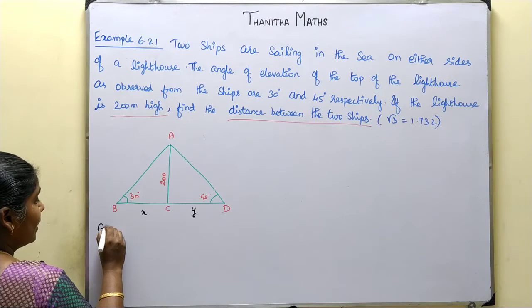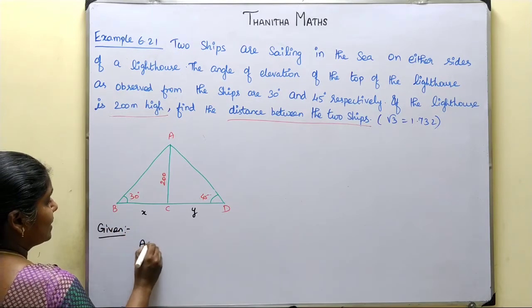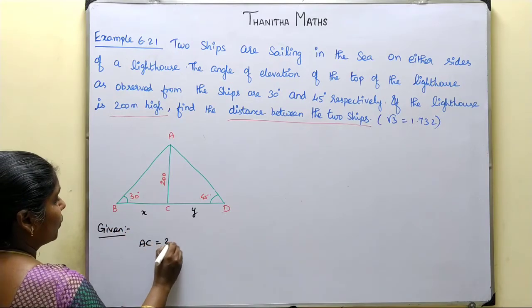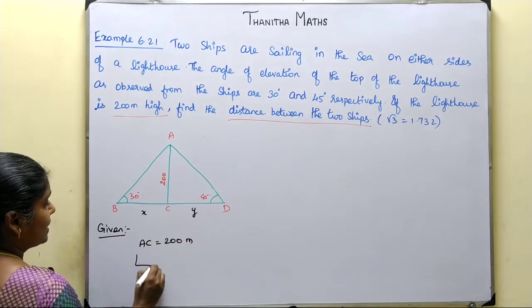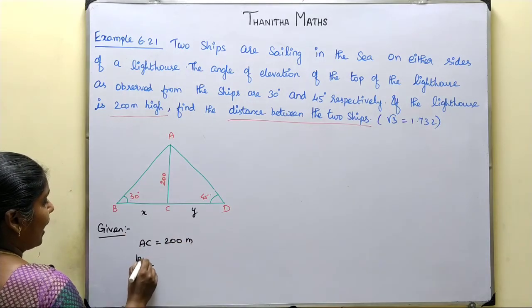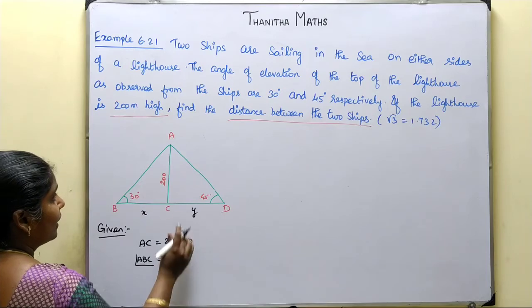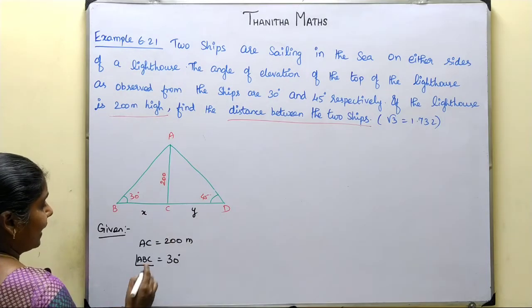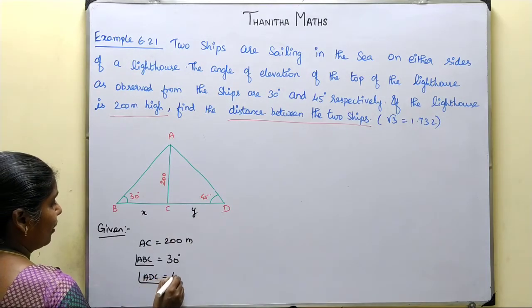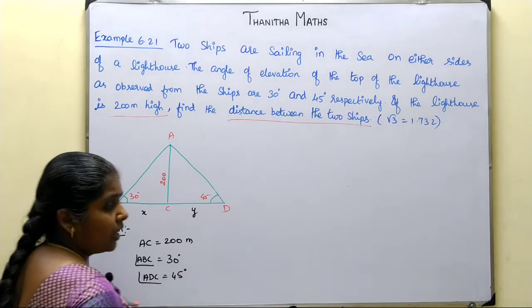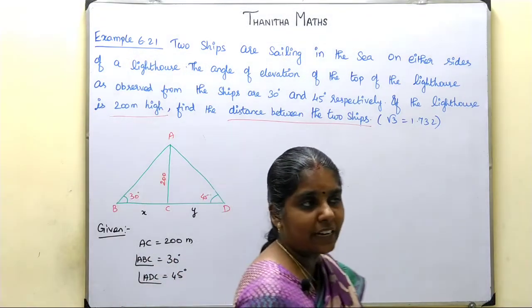What is given? AC is equal to 200m. The angle ABC is equal to 30 degrees. The angle ADC is equal to 45 degrees.